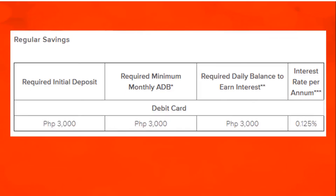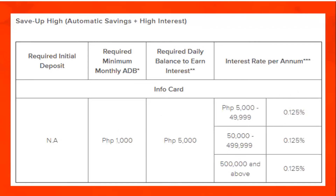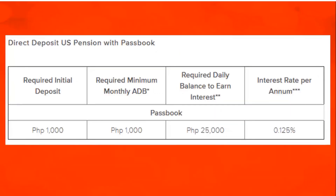Regular savings with debit card. Save Up automatic savings plus insurance with info card. Save Up High, automatic savings plus high interest, with info card. Direct Deposit U.S. pension with passbook.